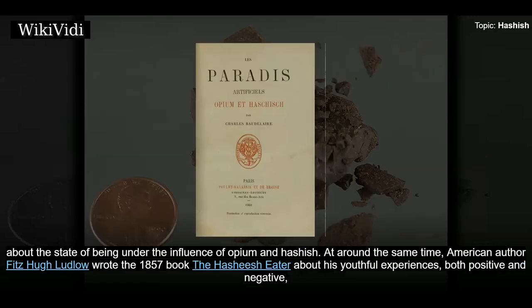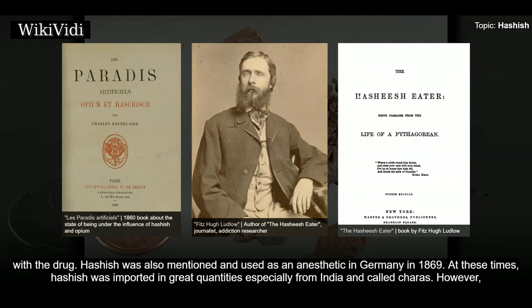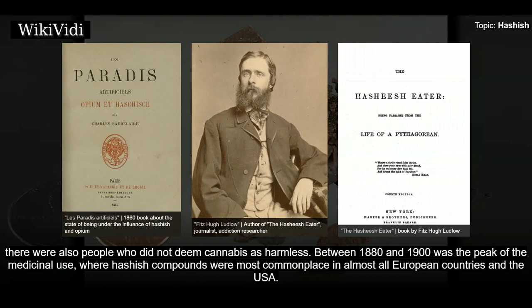Baudelaire later wrote the 1860 book Les Paradis Artificiels about the state of being under the influence of opium and hashish. At around the same time, American author Fitzhugh Ludlow wrote the 1857 book The Hasheesh Eater about his youthful experiences, both positive and negative, with the drug. Hashish was also mentioned and used as an anesthetic in Germany in 1869, and at these times was imported in great quantities especially from India.